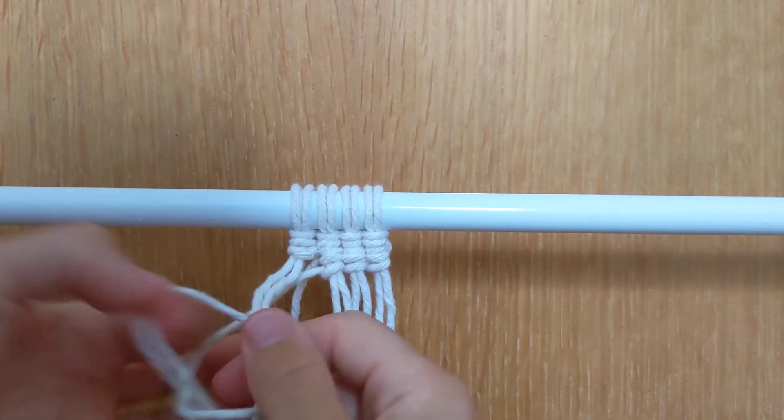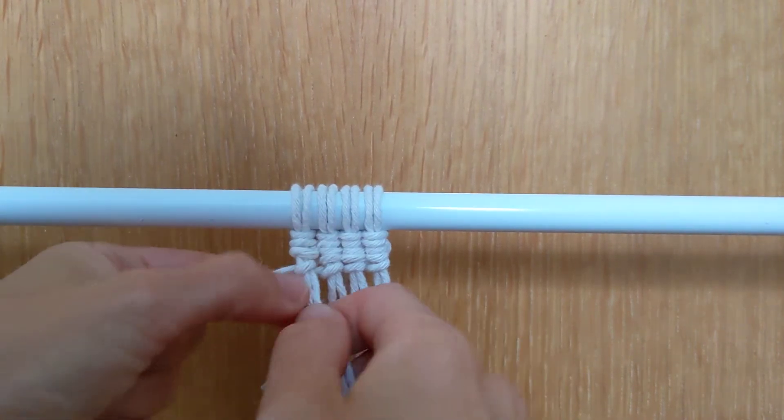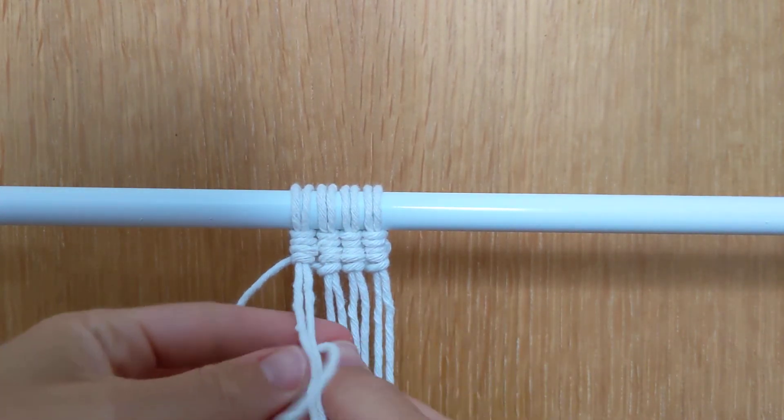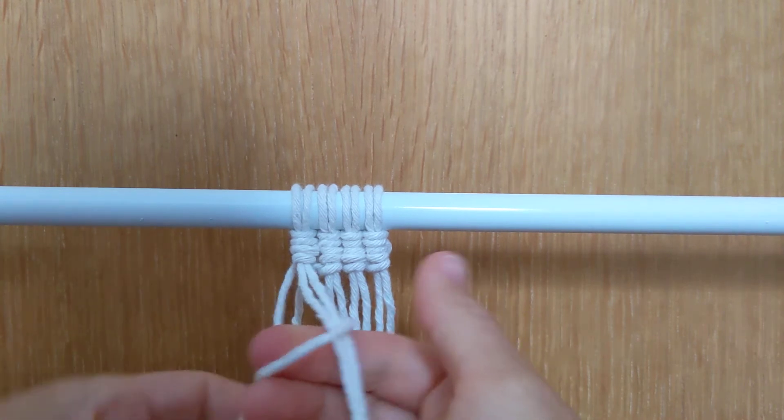And I'm going to go around my lower set: round the back, round the front, through the loop, round the front, round the back, and through the loop.